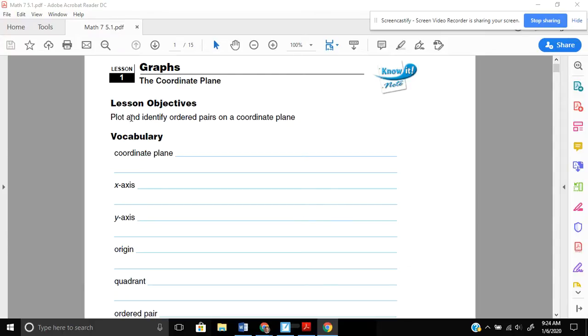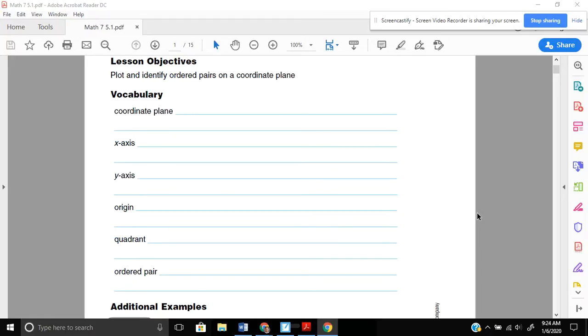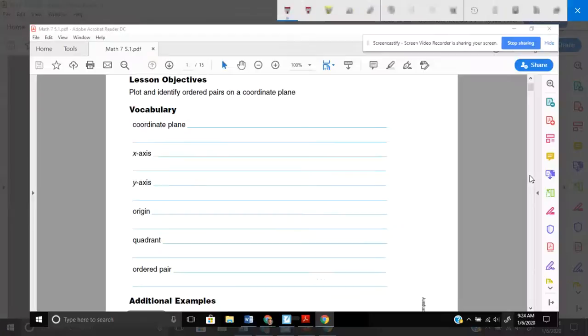Lots about graphs this chapter. And specifically in lesson 1, we want to be able to plot and identify ordered pairs on a coordinate plane. Some of those terms might be a little bit new to you, but that's okay. We'll define a few and work with them here in this lesson. So to start off, we've got quite a few vocab words.